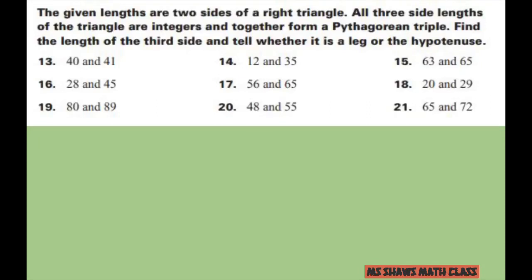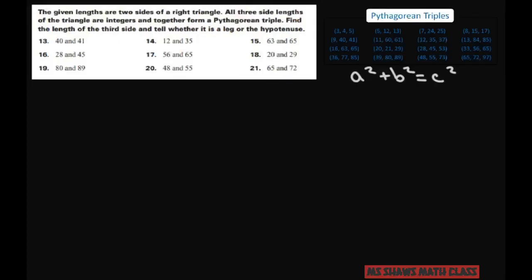Hi everyone. The given links are two sides of a right triangle. All three side lengths of the triangle are integers and together they form a Pythagorean triple. Find the length of the third side and tell whether it is a leg or the hypotenuse. The hypotenuse is always going to be the bigger number compared to the two legs.